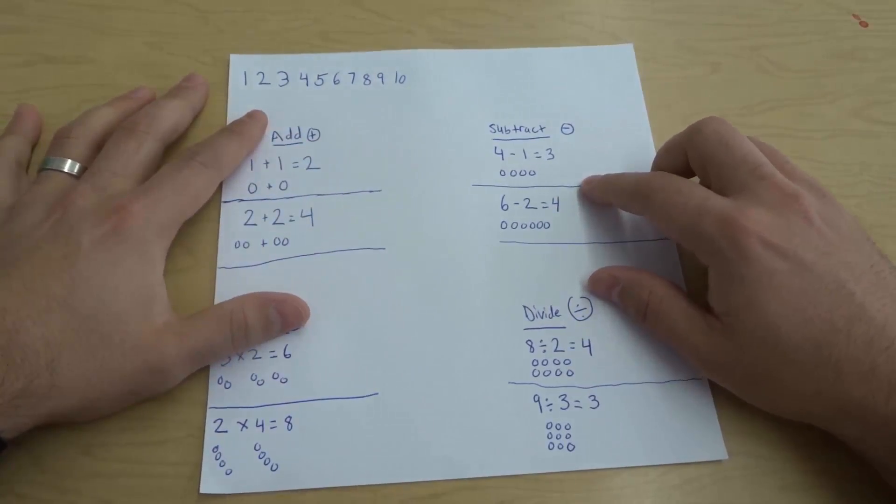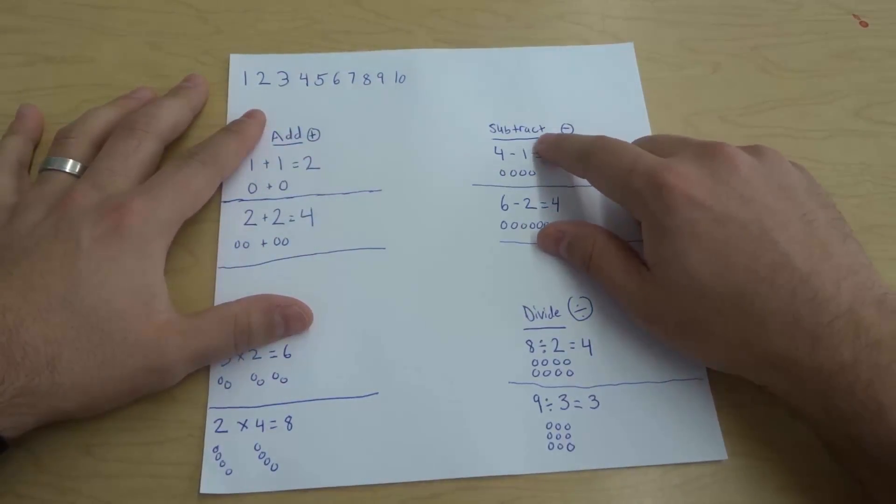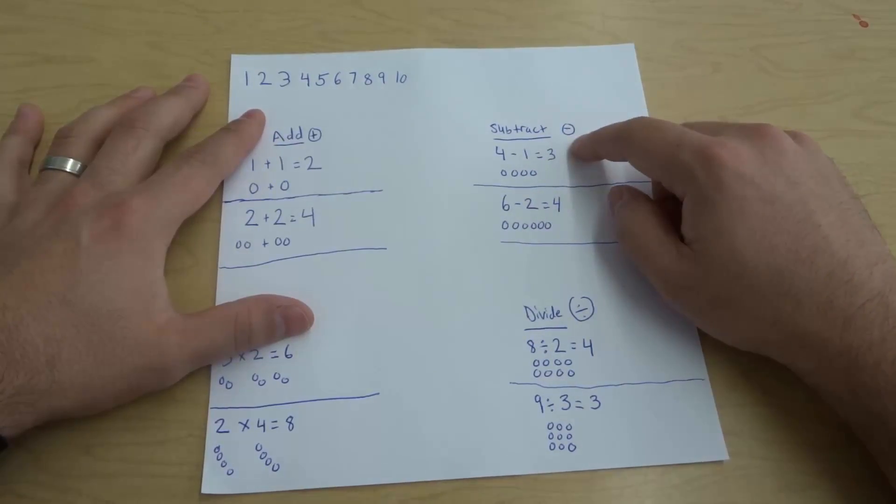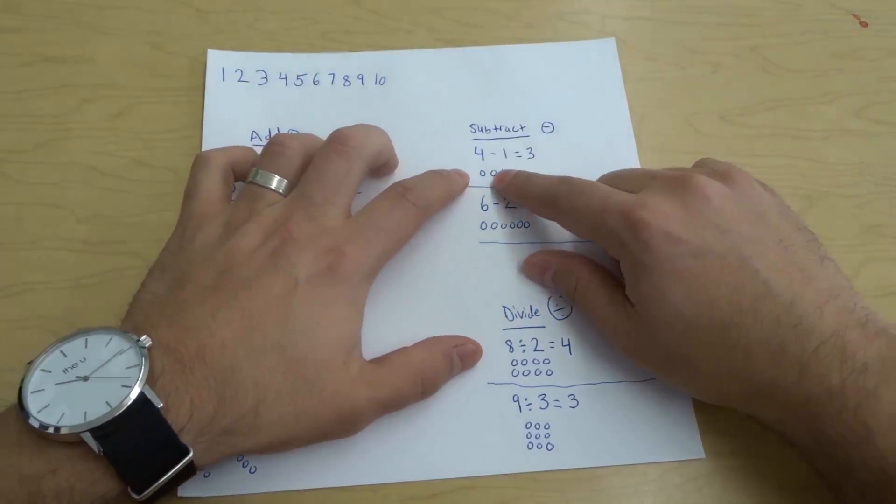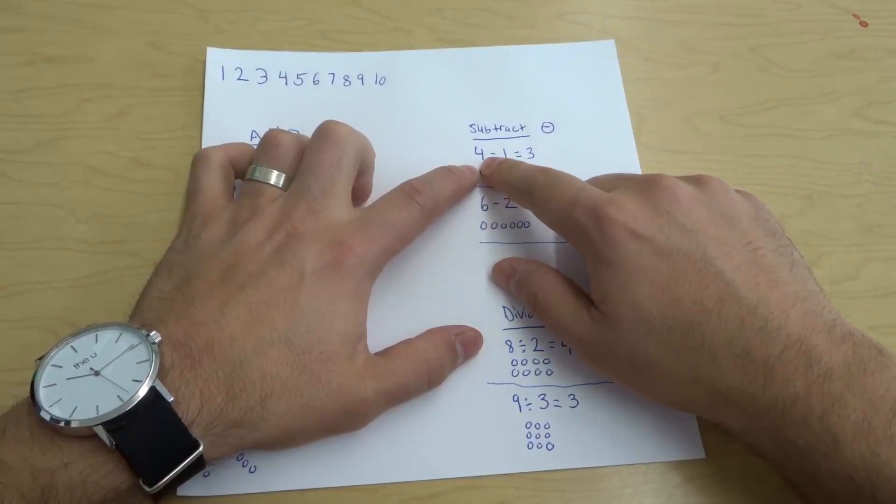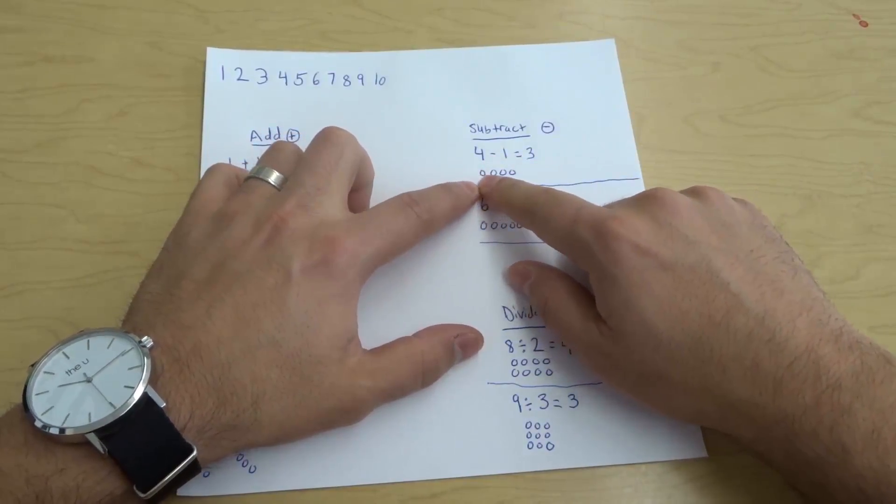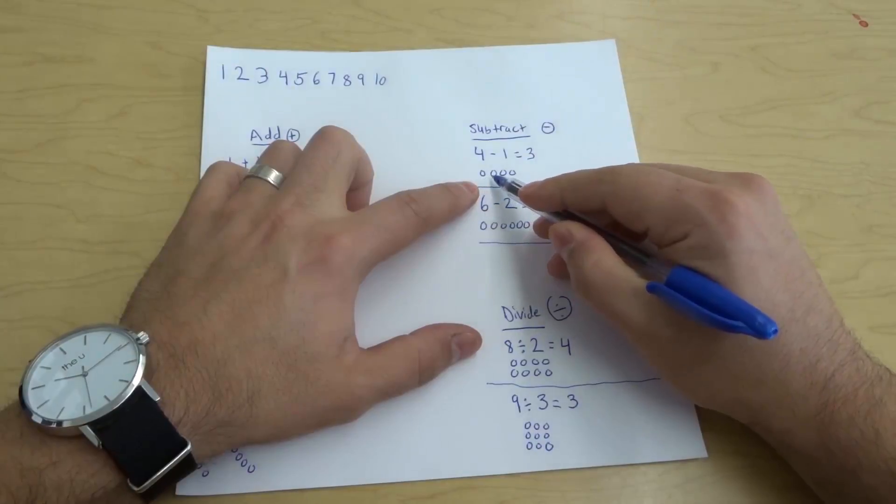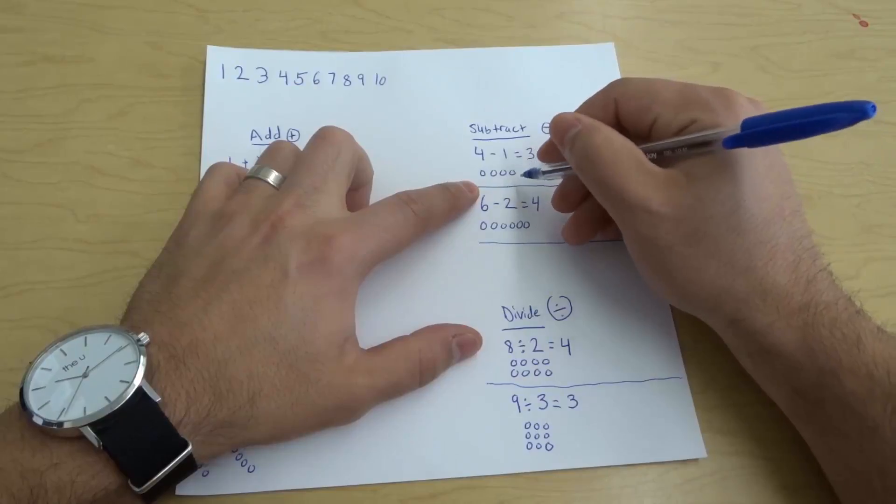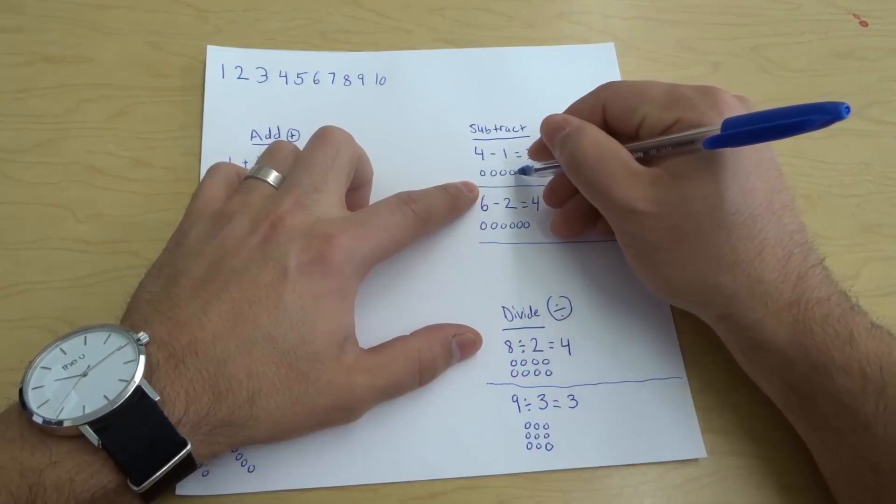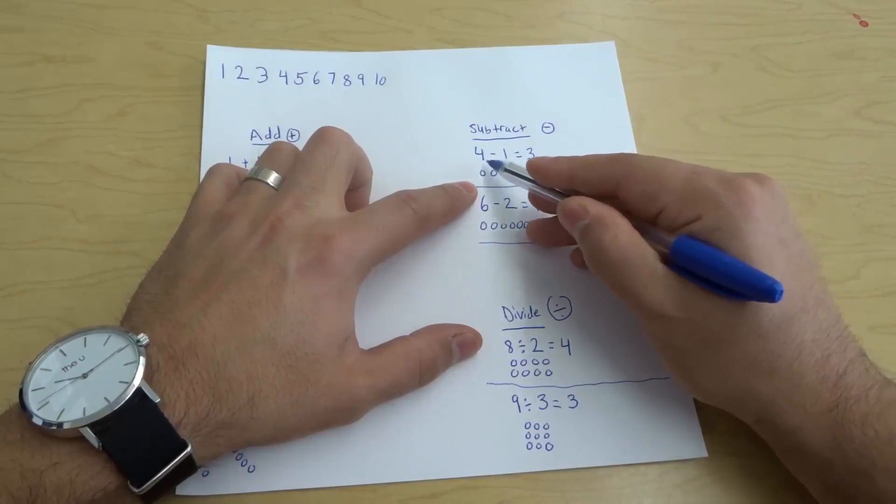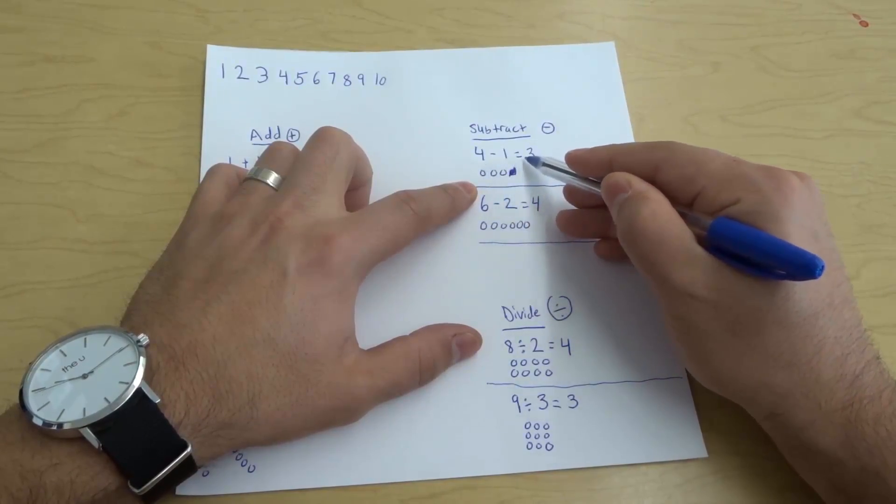The next math skill that I want to go over is subtract. This symbol right here, the straight line going across, is the symbol for subtracting. Now for subtracting, we start off with the big number, and then we're going to take away. So right here I have 4 minus 1. So we start off with 4 circles: 1, 2, 3, 4. And I'm actually just going to remove one of them, take away one of them. So I'm just going to cross it out. And what I have left is 1, 2, 3. So 4 subtract 1 equals 3. Minus is just a different way to say subtract.